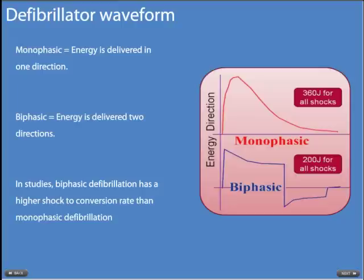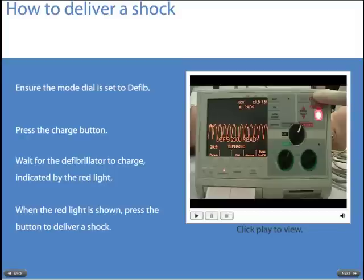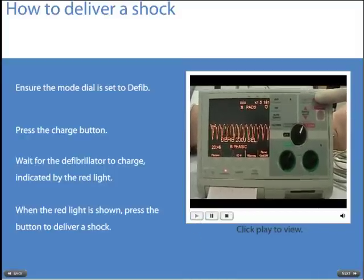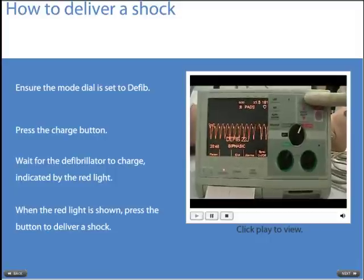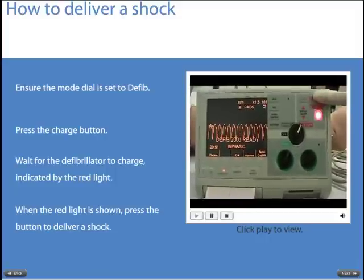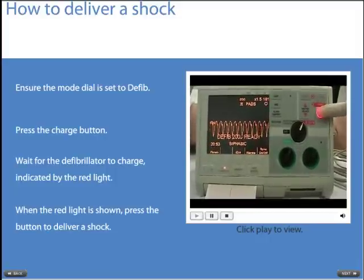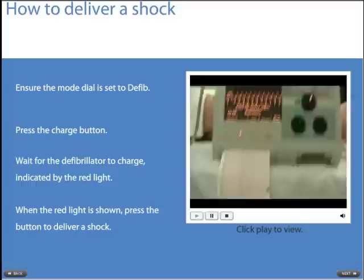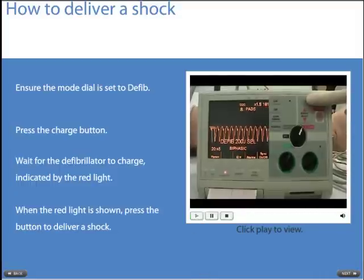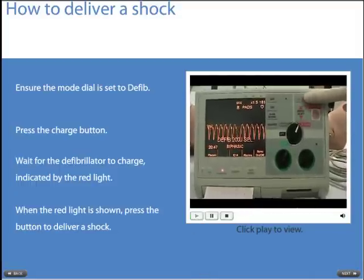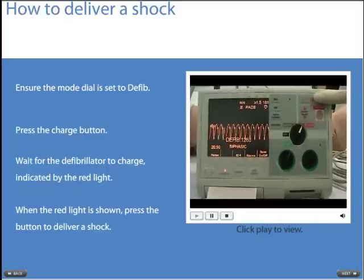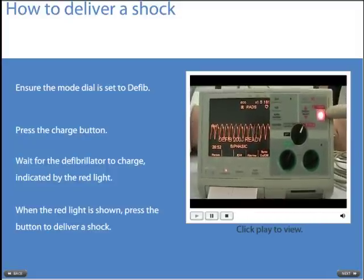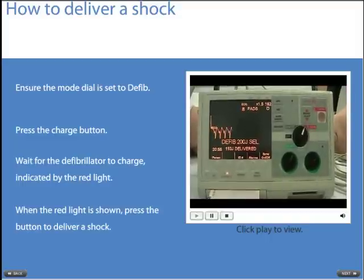In associated VT or VF arrest, you need to be familiar with how your local manual defibrillators work. Usually they are very similar and only variations of a theme from one manufacturer to another. You usually need to turn a mode dial to defib, then press the charge button, wait for the defibrillator to charge — which should be indicated by a bright red light — and then when the bright red light is shown you can deliver the shock.